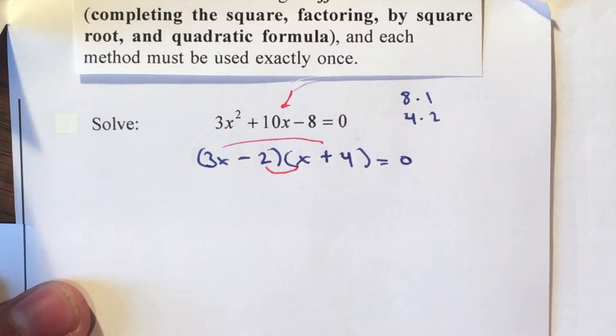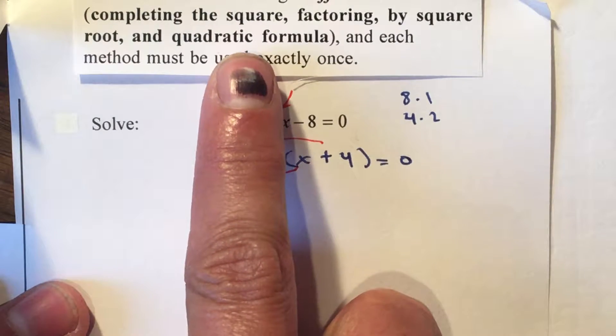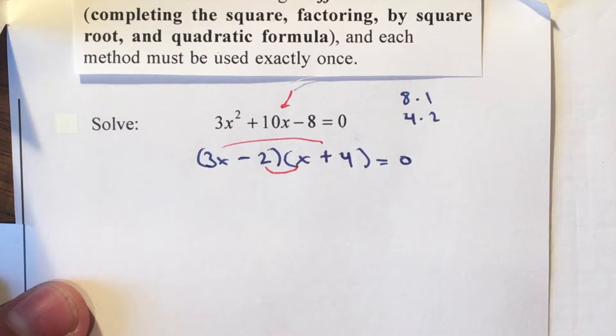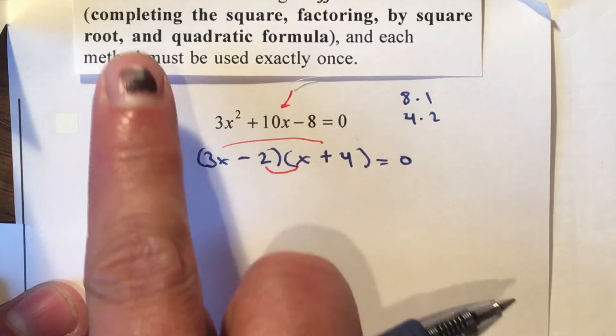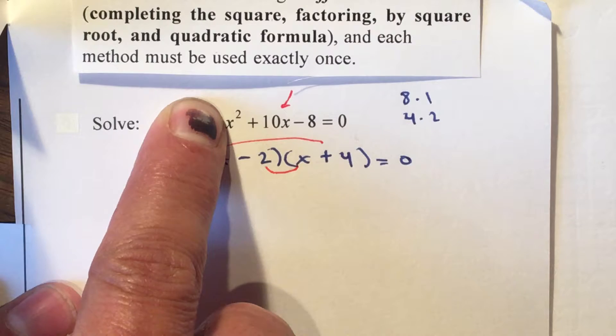So since we're able to factor it, that'll be the easiest process. Now of course you can always use the quadratic formula and you'll get the same answer, but it'll be a much longer process. We cannot complete the square because of this 3. If the 3 was not here, then we could complete the square.